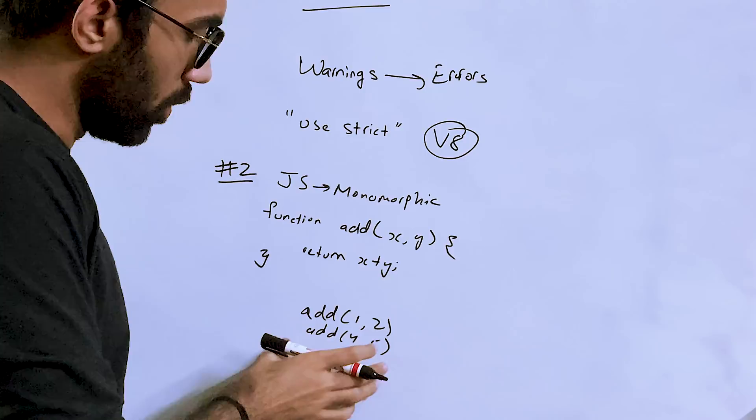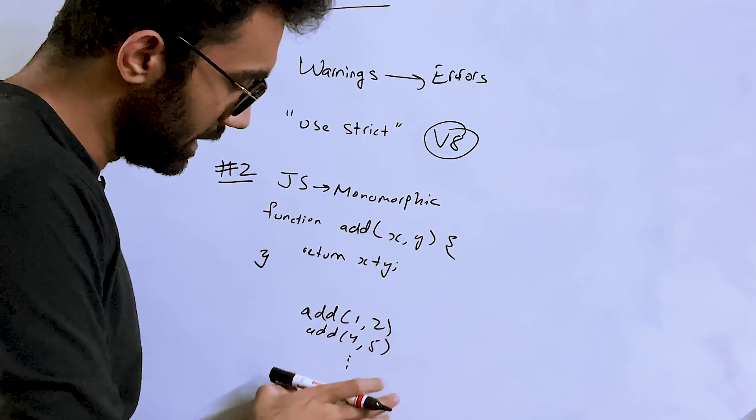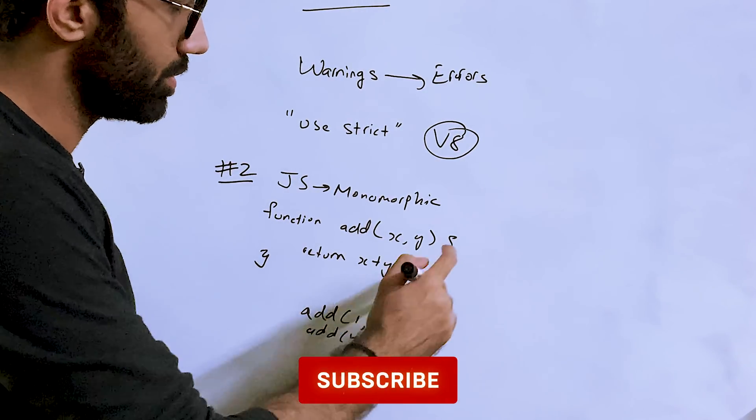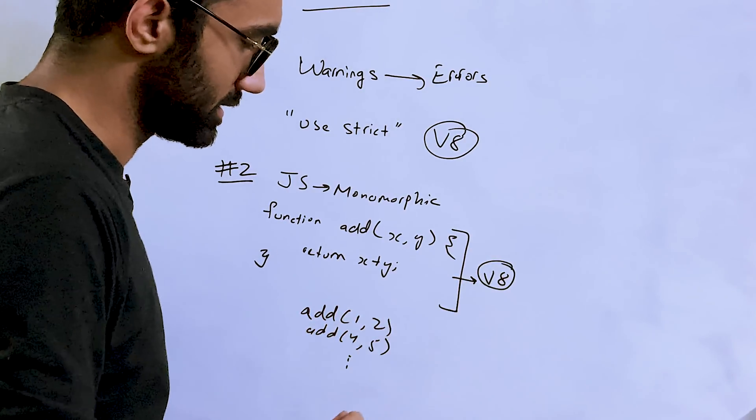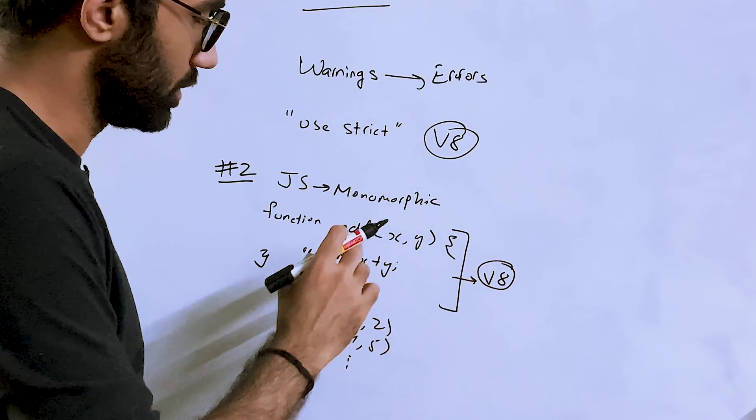What happens in JavaScript is that if you call this function over and over again with just numbers, if you call this function something like add(1, 2), add(4, 5), and you keep on calling it in your application like this, what will eventually happen is that if you keep on calling this with just numbers, JavaScript internally, V8 internally, would optimize the machine code for this.